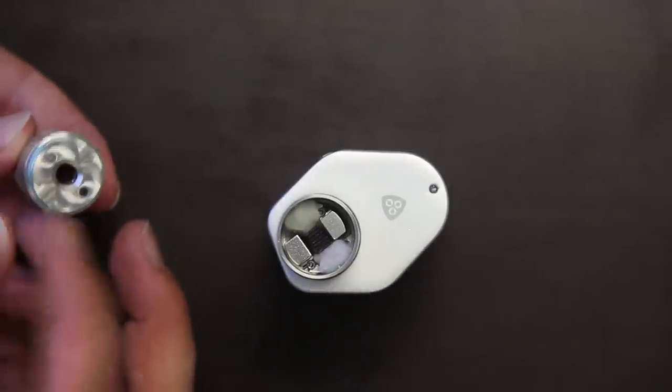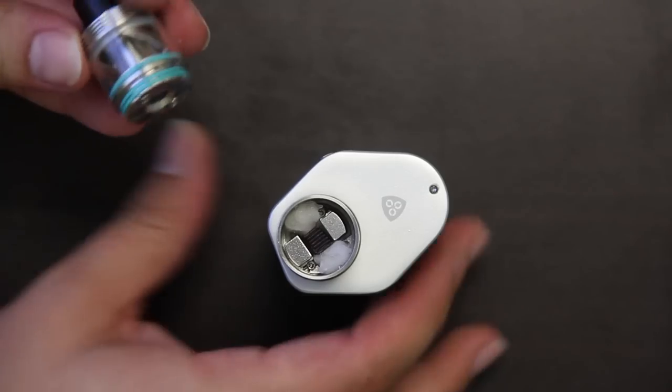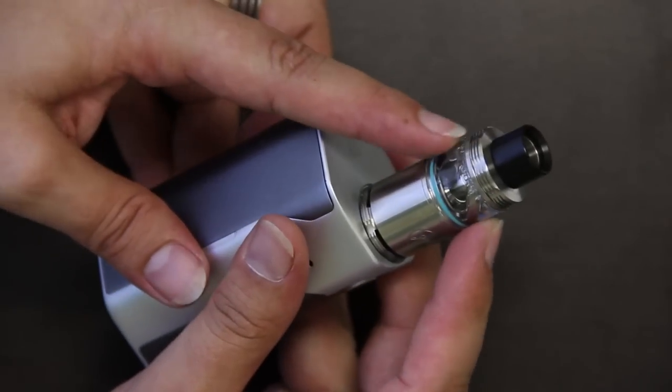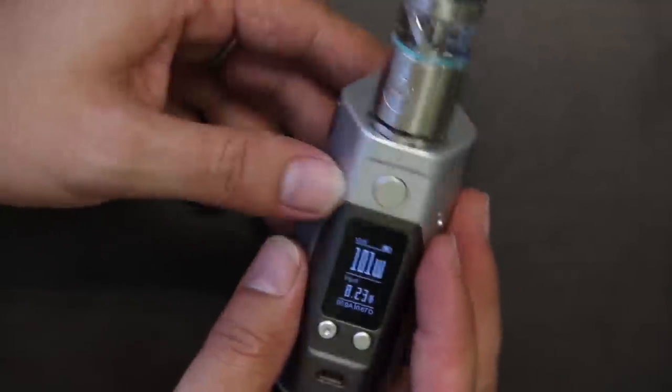Those two little notches will line up with the top cap keeping everything indexed. Make sure you close off the juice fill. The tank will snap into place. Juice should be coming down both of those little inlets. We'll fire it up and give it a test run.